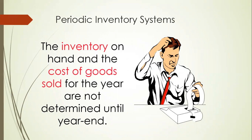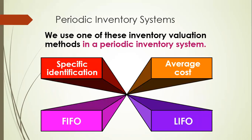In the periodic inventory system, the inventory on hand and the cost of goods sold for the year are not determined until the year end. The perpetual inventory system is timely and you maintain a running table with balances, whereas the periodic system is not maintained continuously. You don't know the cost of goods sold until year end or month end. At the end, you see how much inventory you have on hand and your purchases, and from that you calculate the cost of goods sold.